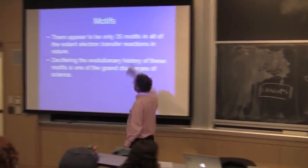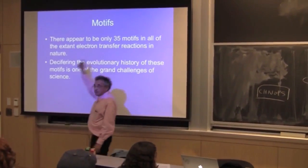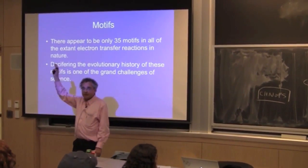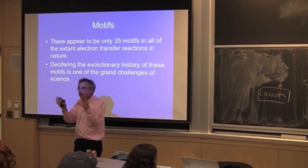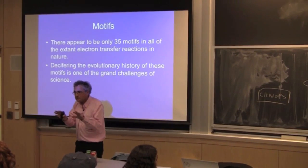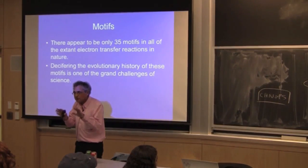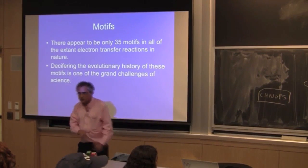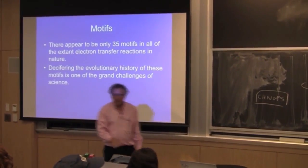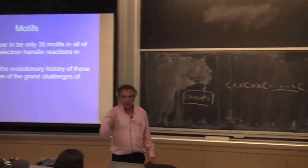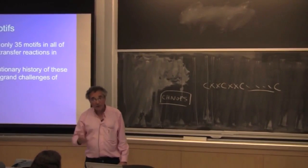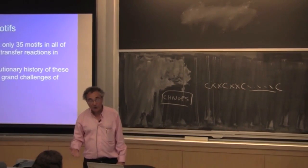There appear to be only 35 motifs across the tree of life. I don't care what the organism is — there are only 35 transistors on the board. 35 transistors, two wires, one power supply. It shouldn't be that hard to figure out how this works.